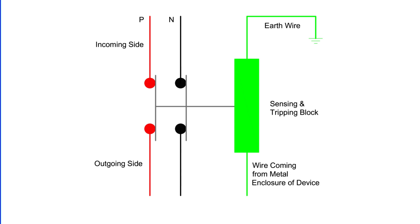Here you can see that the green wire is called earth and the earth terminal is connected through the sensing block.